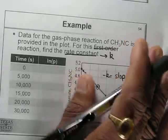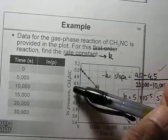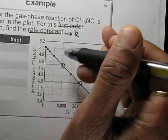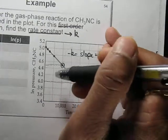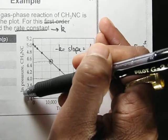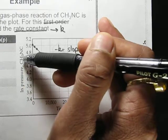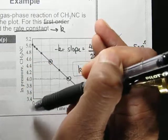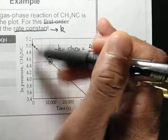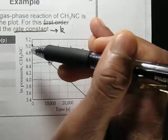Here, time and concentration are provided in a graph. First look at the graph: the y-axis value is the natural log of the pressure of CH₃NC, increasing from 0 to 5.2, so these values are given as natural log values.